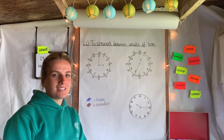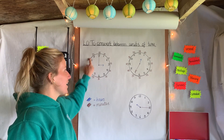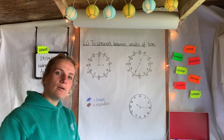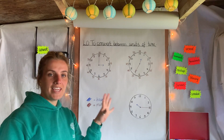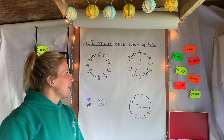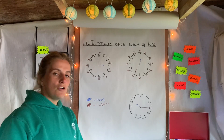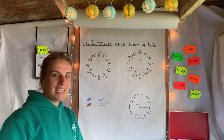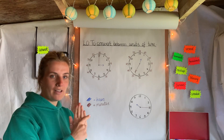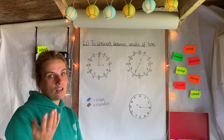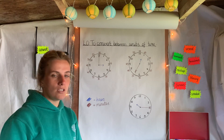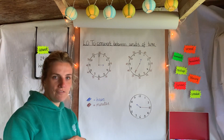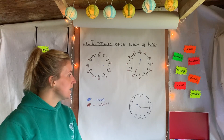When we talk about time, we talk about it in analog form, which you might have on your bedside table as an alarm clock or in the kitchen. We also talk about digital time, which is what you might see on your mobile phone or on an alarm clock next to your bed. It's really important that we can convert between the two.